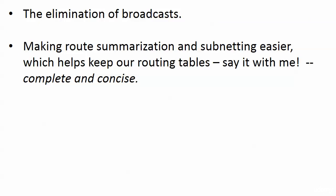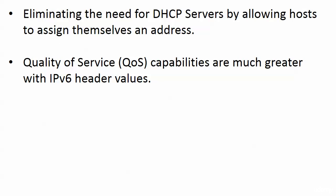Route summarization - where we take multiple routes, break them down into binary and represent them with just one route - version 6 was built for that, version 4 really wasn't. With subnetting, you can see it's a lot easier in version 6, and it helps keep our routing tables complete and concise. Version 6 was really built with summarization and subnetting in mind.